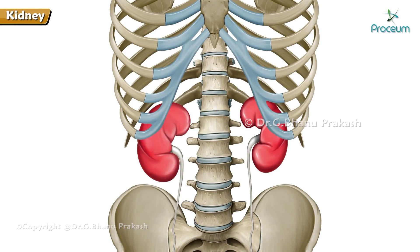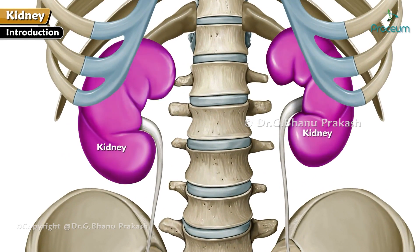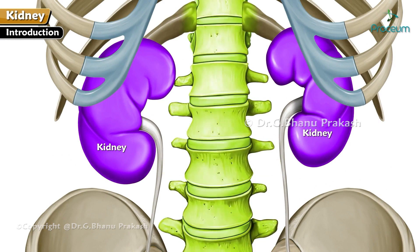Anatomy of the Kidney. Kidneys are major excretory organs which lie on the posterior abdominal wall, one on each side of the vertebral column behind the peritoneum.